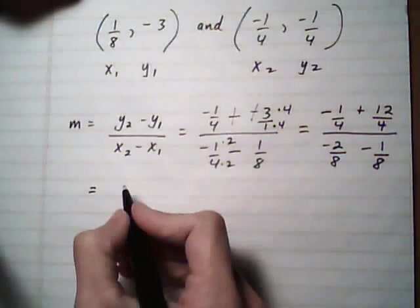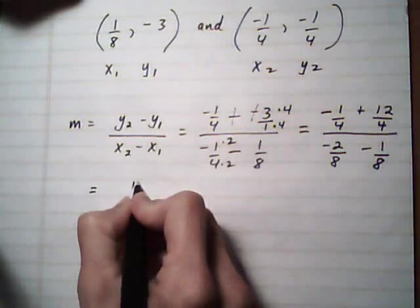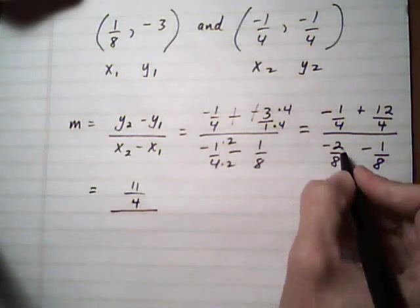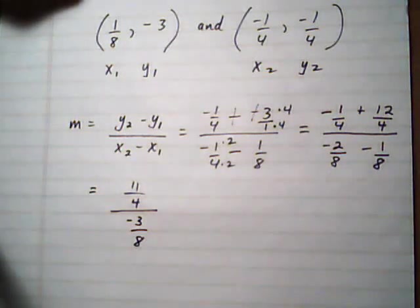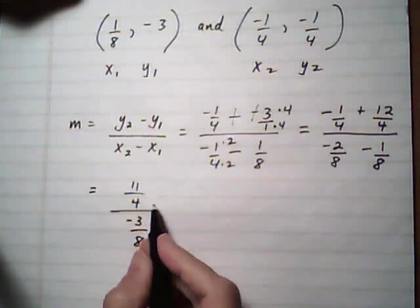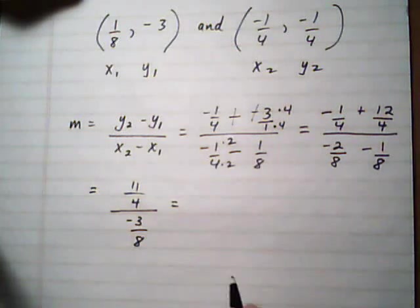And so we keep going. For the top we get minus 1 plus 12, is 11 over 4. Minus 2 minus 1, is minus 3 over 8. And now we have one fraction over one fraction, which is exactly what we want. Because we're going to be able to say it's the top one times the reciprocal of the bottom.